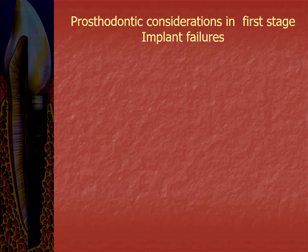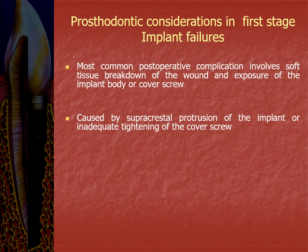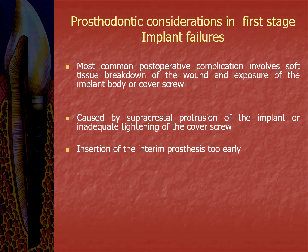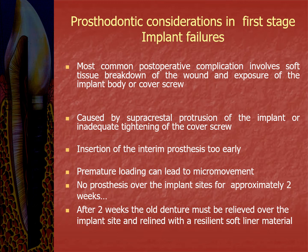Prosthodontic considerations in first stage implant failure: the most common post-operative complication involves soft tissue breakdown and exposure of the implant body or cover screw. Forces on the mucosa cause compression over the implant, and perforation can also be caused by supra-crestal protrusion or inadequate tightening of the cover screw. Inserting an interim prosthesis too early may adversely affect healing, causing gingival perforation and implant exposure. Premature loading can lead to micro-movement. For a completely edentulous patient, no prosthesis should be present over the implant site for approximately 2 weeks, after which the denture should be relieved and re-lined with a resilient soft liner material.